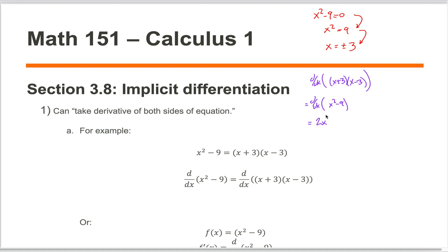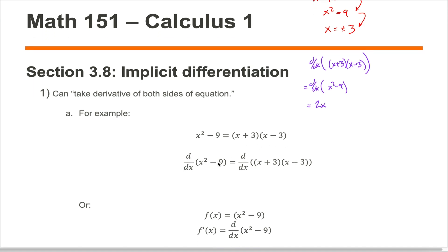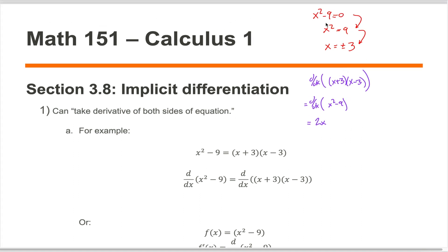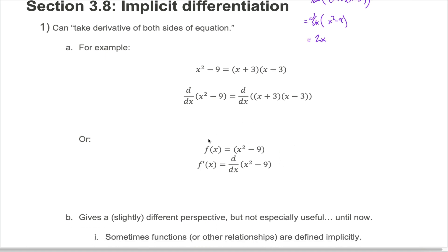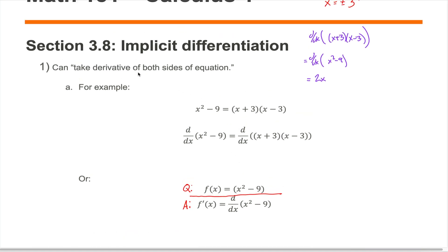It turns out it's perfectly legitimate to take the derivative of both sides of an equation. The fact that x²-9 equals (x+3)(x-3) means the derivative of x²-9 equals the derivative of (x+3)(x-3). A better illustration: if f(x) = x²-9, and you take the derivative of both sides, you get f'(x) equals the derivative of x²-9. You could think of that as taking the derivative of both sides of an equation — and that's perfectly valid mathematically.